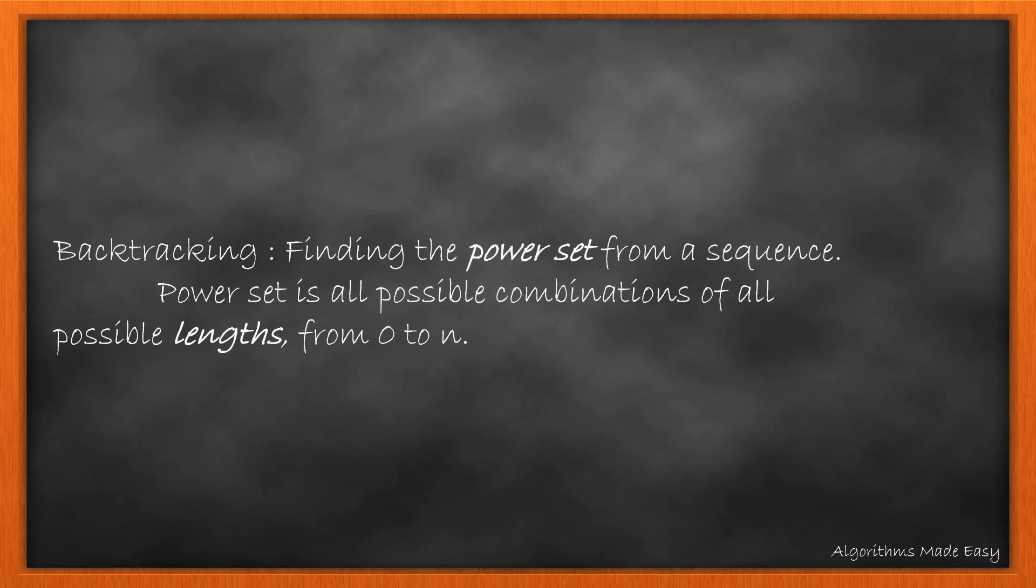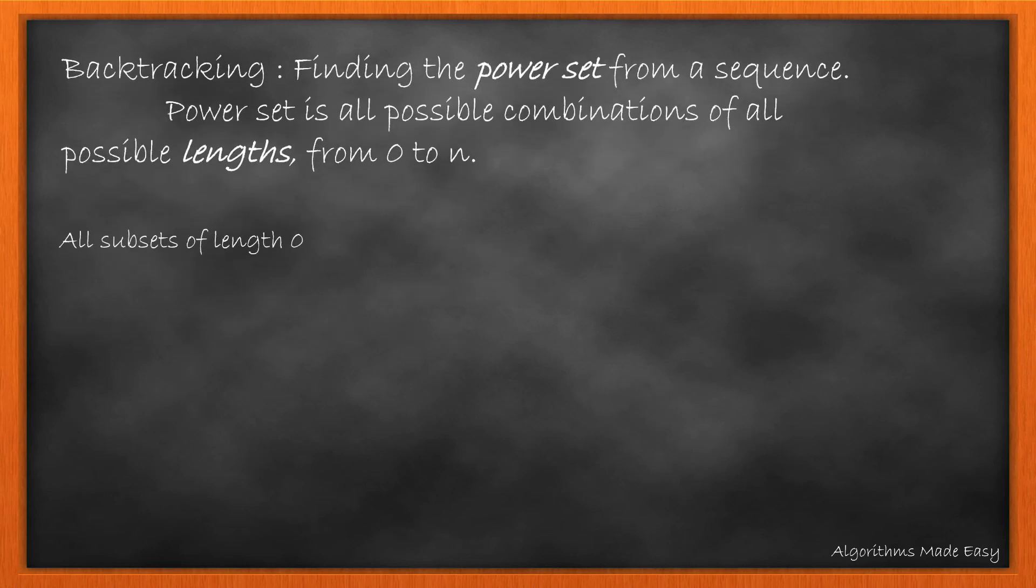The second method is backtracking. It is based on finding the power set from a sequence. A power set is all possible combinations of all possible lengths from 0 to n. Taking the example of 1, 2, 3, we will first find all possible subsets of length 0. That gives us one empty subset.